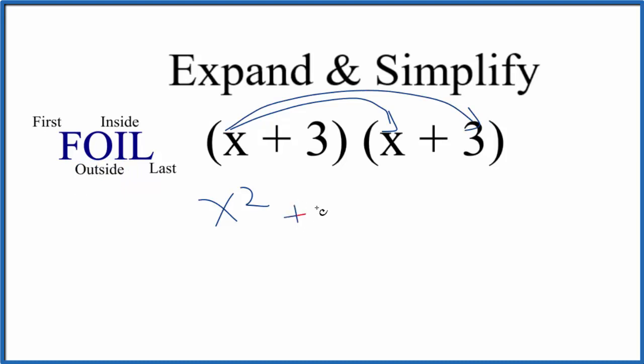over here, that's just 3x. Do the inside - 3 times x, that's 3x. And then we do the last term - 3 times 3, that gives us 9. So since these terms here are similar, we can combine those. We end